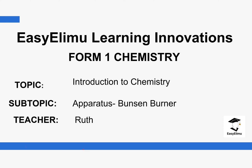Welcome to Easy Elim Learning Simplified. My name is Ruth and today we are going to be discussing an introduction to chemistry. We are still discussing the Bunsen burner, but today we are going to be focusing on the non-luminous flame. In the previous lesson we said we prefer the non-luminous flame because it's hot and doesn't produce soot. Today we are going to look at which region in the non-luminous flame is the hottest and why.